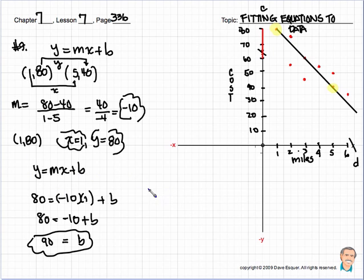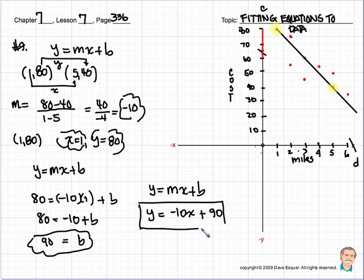Well, let's finally use this information and write our equation in slope-intercept form. Y equals, one more time, MX plus B. Finally we have an equation: Y equals minus 10X plus 90. So there's my equation as I fitted it to this set of data.